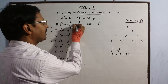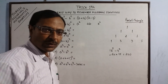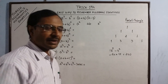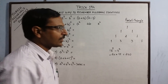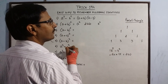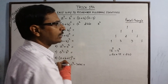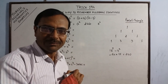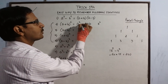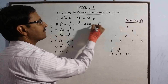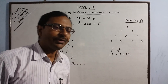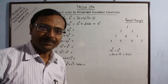We put coefficient 1 (which we don't need to write explicitly), then 2, then 1 again. Since we have a positive sign, we put positive signs in between to get the identity of A plus B whole square.